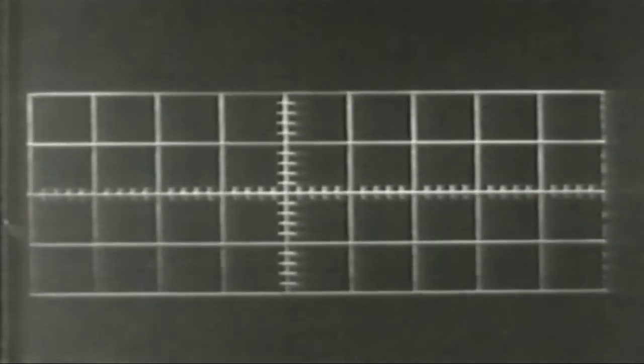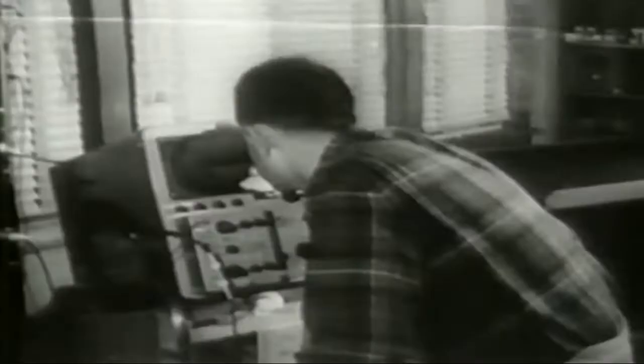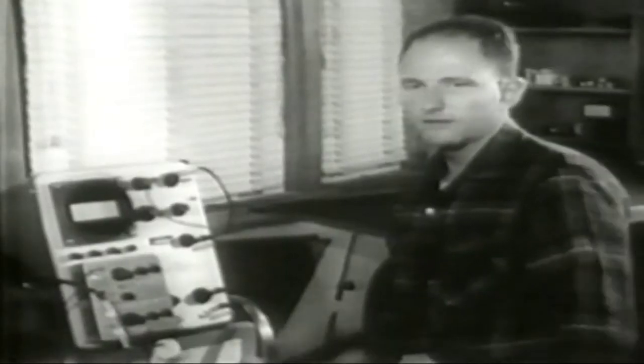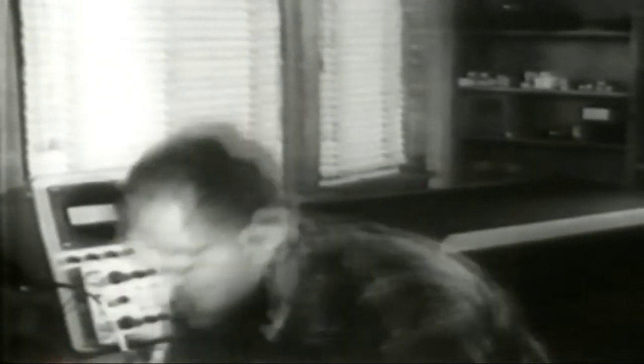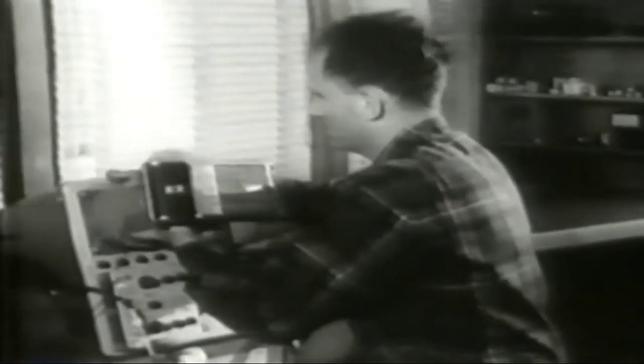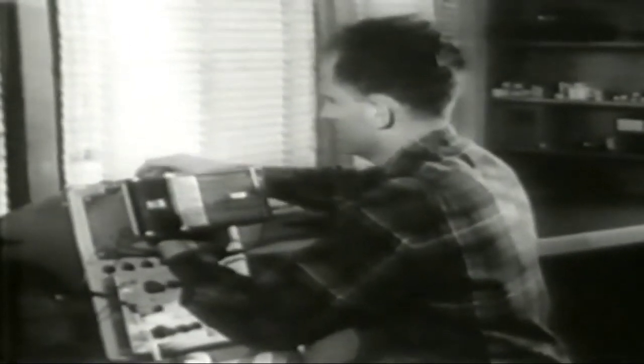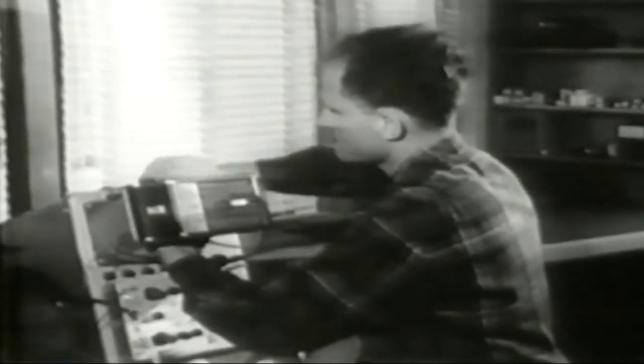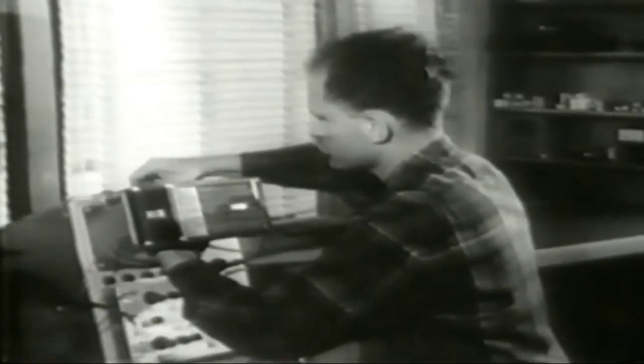Questi sono i soli impulsi che ci interessa registrare. Vedete gli impulsi di decadimento spuntare da dietro la maschera. A noi interessa solo a che punto della nostra scala dei tempi avviene il decadimento. Il modo più comodo per registrarlo è di usare questa macchina Polaroid. Se lasciamo l'otturatore aperto possiamo registrare fino a 20 impulsi distinti uno dopo l'altro sulla stessa fotografia.